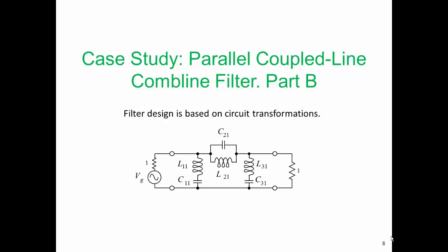In this part, we're going to talk about the transformations required to go from a lumped element circuit to a transmission line-based circuit. We know what we're trying to do here. We're dealing with a bandpass filter which can be precisely represented using lumped elements. We want to go from here to a transmission line realization, the parallel coupled line realization.